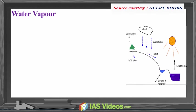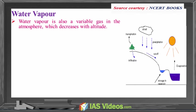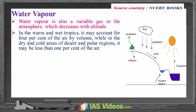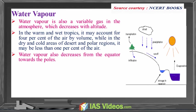Water vapour is also a variable gas in the atmosphere which decreases with altitude. In the warm and wet tropics it may account for 4% of the air by volume, while in the dry and cold areas of deserts and polar regions it may be less than 1% of the air. Water vapour also decreases from the equator towards the poles.